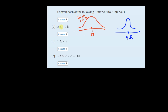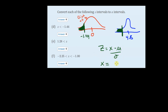Let's do part D. We have Z less than negative 1.44. Negative is over here to the left of 0 — negative 1.44 — and Z is less than, so that's this area back here. There is a corresponding cutoff we have to figure out where this green area is exactly the same as the area over here. Remember, we had the formula Z equals X minus mu divided by sigma. We can use algebra to rewrite this — multiply both sides by sigma, add mu to both sides, and you get a new formula: X equals Z sigma plus mu.